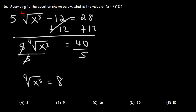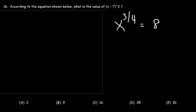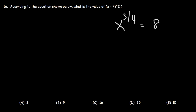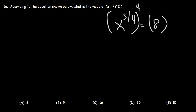What we need to do is convert this radical expression into a fractional exponent. So the fourth root of x cubed can be written as x raised to the 3 over 4. Now we need to get x by itself, so we need to get rid of this fractional exponent. The best thing to do is to raise both sides to the reciprocal of 3 over 4, which is going to be 4 over 3.